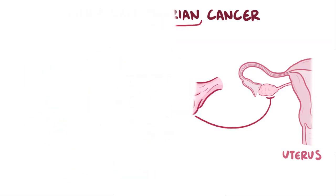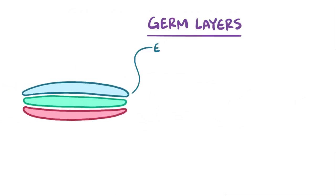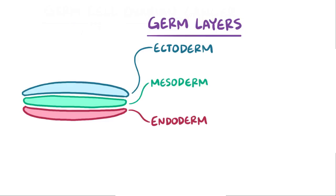During fetal development, the entire body derives from three layers called germ layers: the ectoderm, mesoderm, and endoderm. These germ layers are made of germ cells, and the germ cells migrate out and differentiate into all of the different types of tissues.